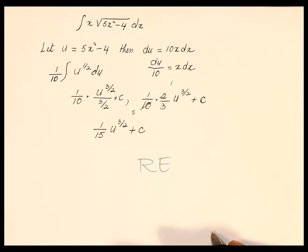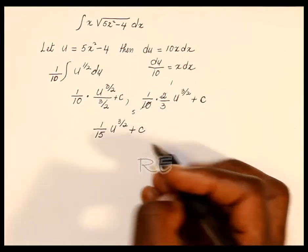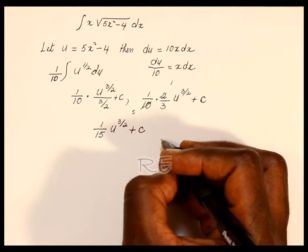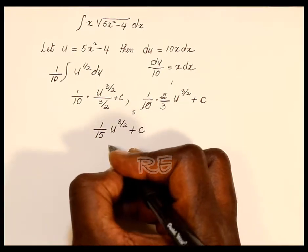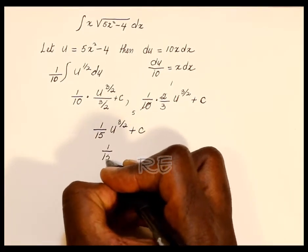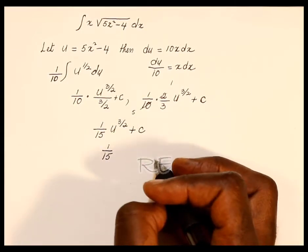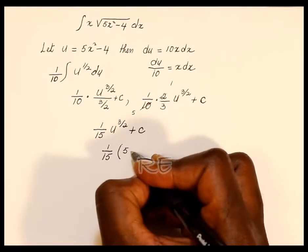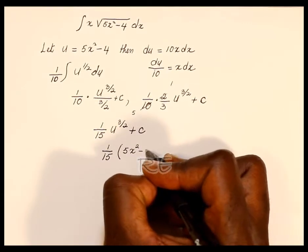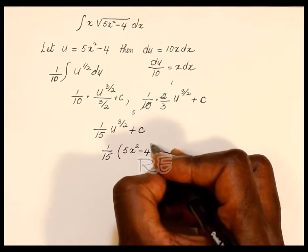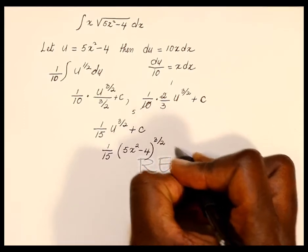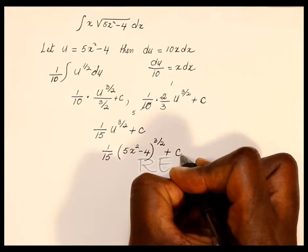That's it — our job is done. We just have to substitute back. Remember that u is equal to 5x squared minus 4. So we'll just substitute u by 5x squared minus 4 to complete the job: 5x squared minus 4, to the 3 halves, plus c.